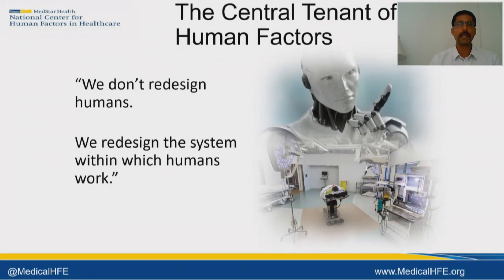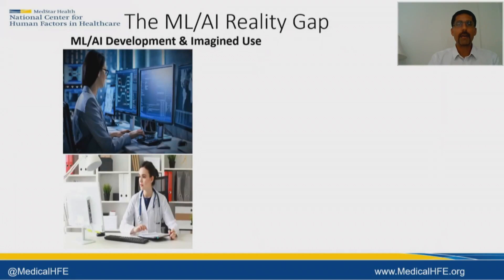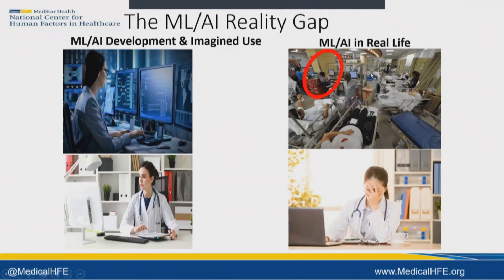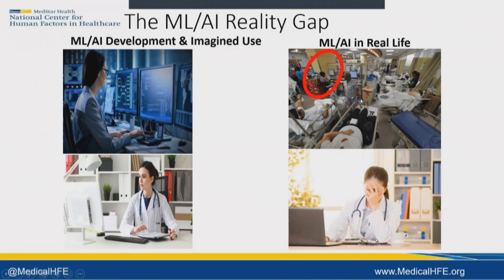With that as the background, I want to jump into what we call the machine learning AI reality gap. If we think about how most machine learning and AI development happens, typically it's a core team focused on accessing several different rich data sets, developing algorithms. They'll reach out to a handful of users to get some insight about how that algorithm might be applied. But if we look at how it's actually used — take a sepsis algorithm used in the emergency department — you can see this really complex environment. That algorithm that may have cost hundreds of thousands or millions of dollars to develop is now living in a very complex environment, maybe given just seconds of somebody's attention to shape their decision making.